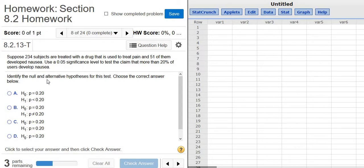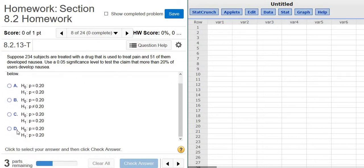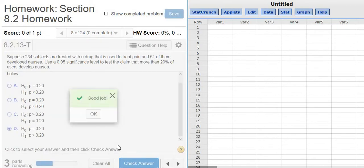The first step is to identify the null and alternate hypotheses. The last sentence will usually give us a hint on that. The symbol we use is P because it's talking about a percentage. Here it says claim that more than 20%, so that's going to be our H1. P greater than 0.20. So the proportion of people with nausea is greater than 0.20. That's our null and alternate hypotheses.